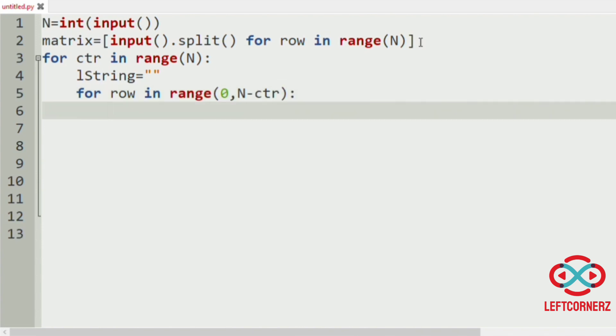So now we will append the characters to the L string. L string plus equals matrix of row and counter.